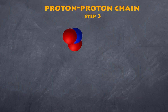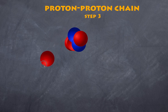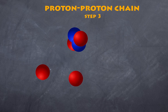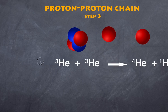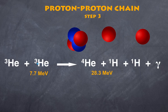In step three, a helium-3 combines with another helium-3, briefly forming a large nucleus with four protons and two neutrons. This doesn't last long — two protons come off, leaving a helium-4 nucleus with two protons and two neutrons, plus two hydrogen atoms and gamma radiation. In summary: helium-3 + helium-3 → helium-4 + 2H + gamma. The binding energy increases from 7.7 MeV to 28.3 MeV, so we lose mass and gain energy.